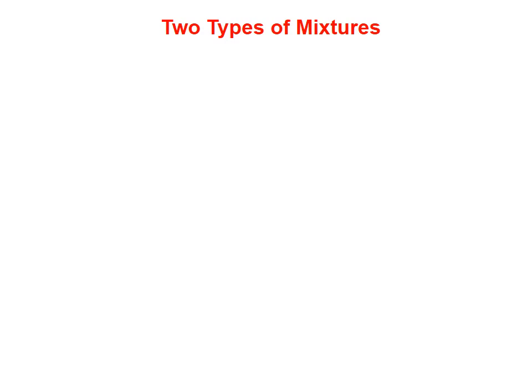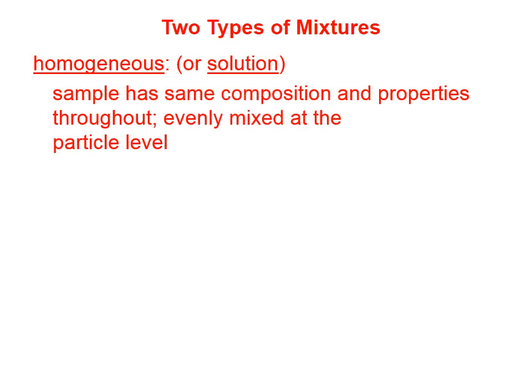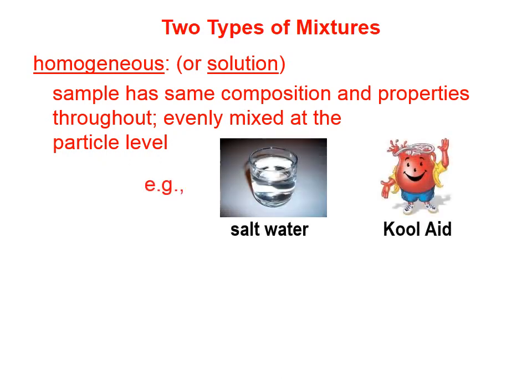Just like there are two types of substances — elements and compounds — if we have a mixture, it's either a homogeneous mixture or a heterogeneous mixture. A homogeneous mixture, also called a solution, is one in which a given sample has the same composition and properties throughout. It's evenly mixed at the particle level — you can't distinguish one particular substance. It all looks uniform. Salt water and Kool-Aid are examples of homogeneous mixtures.